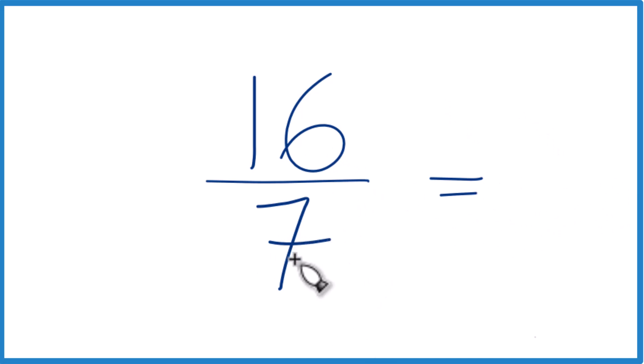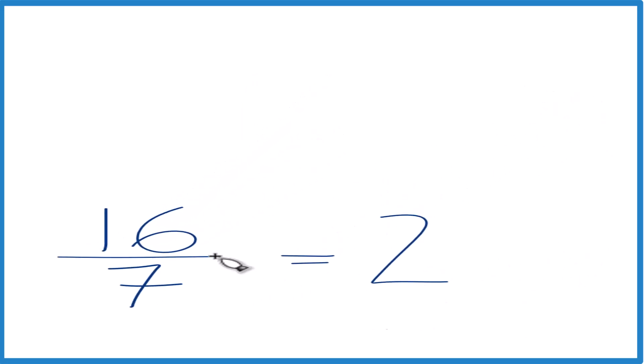So to do that, 7 goes into 16 two times. 2 times 7 is 14, so 2, that's our whole number, and then, so 2 times 7 is 14 with 2 left over.